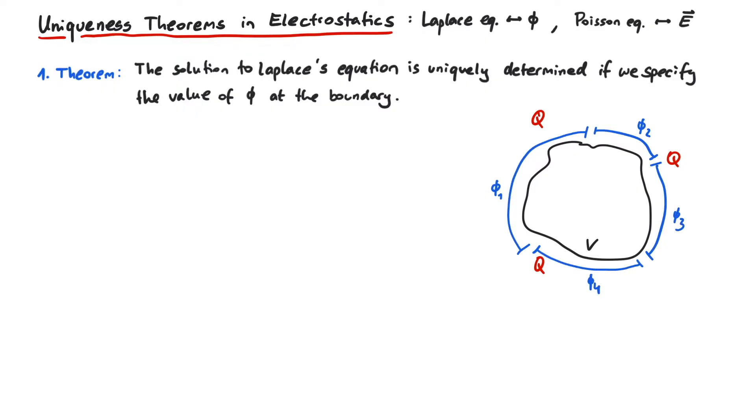So let's start by assuming that we have two solutions to this Laplace equation, phi1 and phi2. They obey the same boundary conditions, so phi1 at the boundary is equal to phi2 at the boundary.